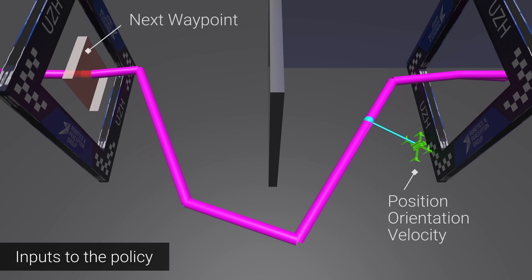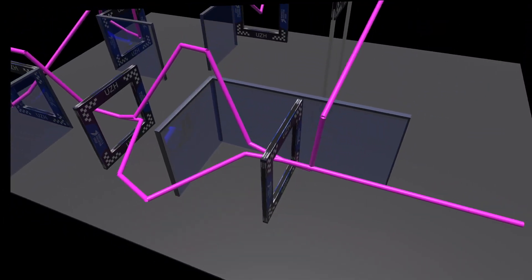To encode the position of the nearest obstacle, we use the farthest point along the guiding path that can be connected with a straight line from the drone without intersecting an obstacle. All this information is used by the neural network to compute desired collective thrust and body rate commands.